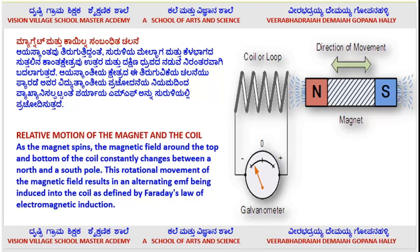That shows clearly that when the lines of forces cut, you will get the electromotive force. This is very important — during the forward and backward motion of the bar magnet through the coil or loop, you will get the current. That is called Faraday's law of electromagnetic induction.